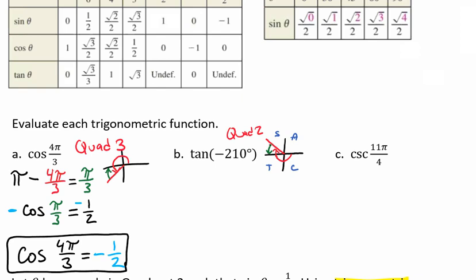Notice that our terminal side is in quadrant 2. We're going to be using pi again or in this case 180 degrees to find our reference angle. We're going to take 210 degrees minus 180, which tells us our reference angle is 30 degrees.